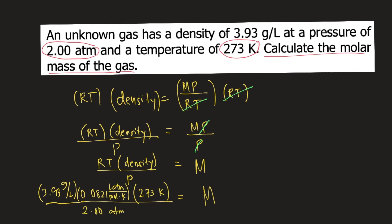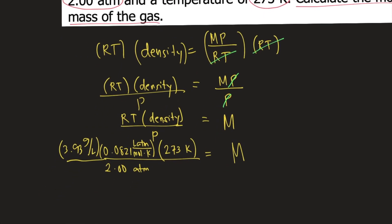Let's check how the units will cancel. Kelvin will cancel. Atm will cancel. And liters will cancel. So the unit for molar mass is grams per mole.